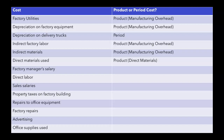Before we continue, what's the purpose of figuring out what's a product cost and what's a period cost? Well, you might need to be able to figure out your cost of goods manufactured. To do that you need to know what is a product cost, because we only worry about product costs. So that's why we need to go through each of these and figure out which one is a product cost and which one is a period cost.